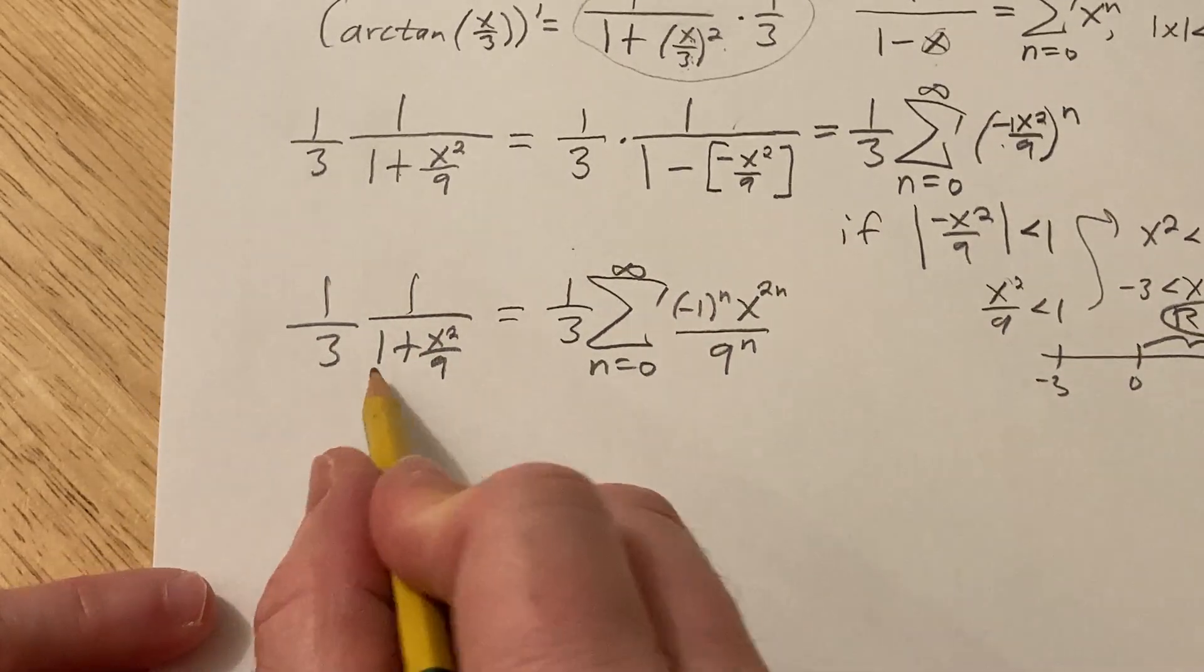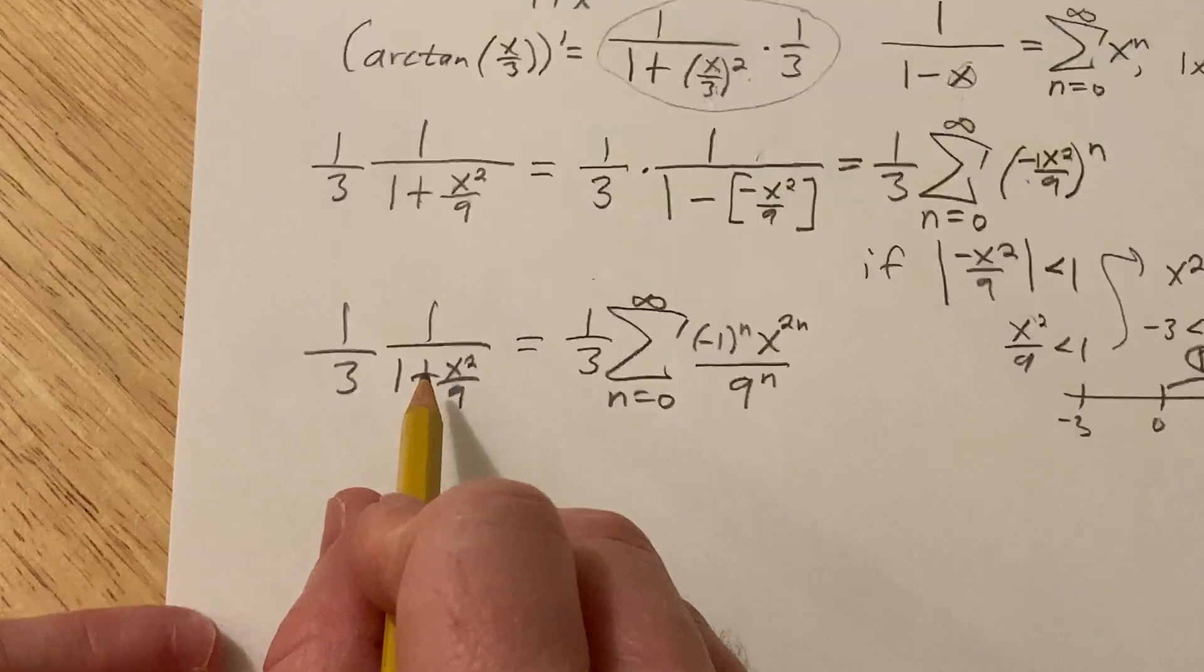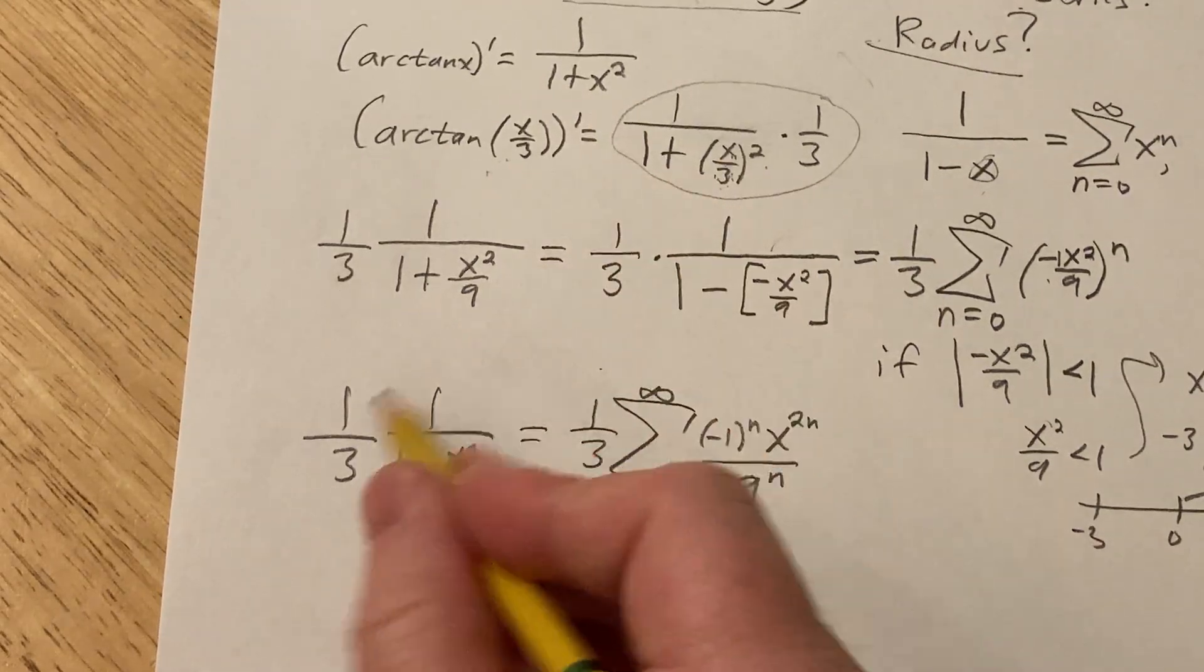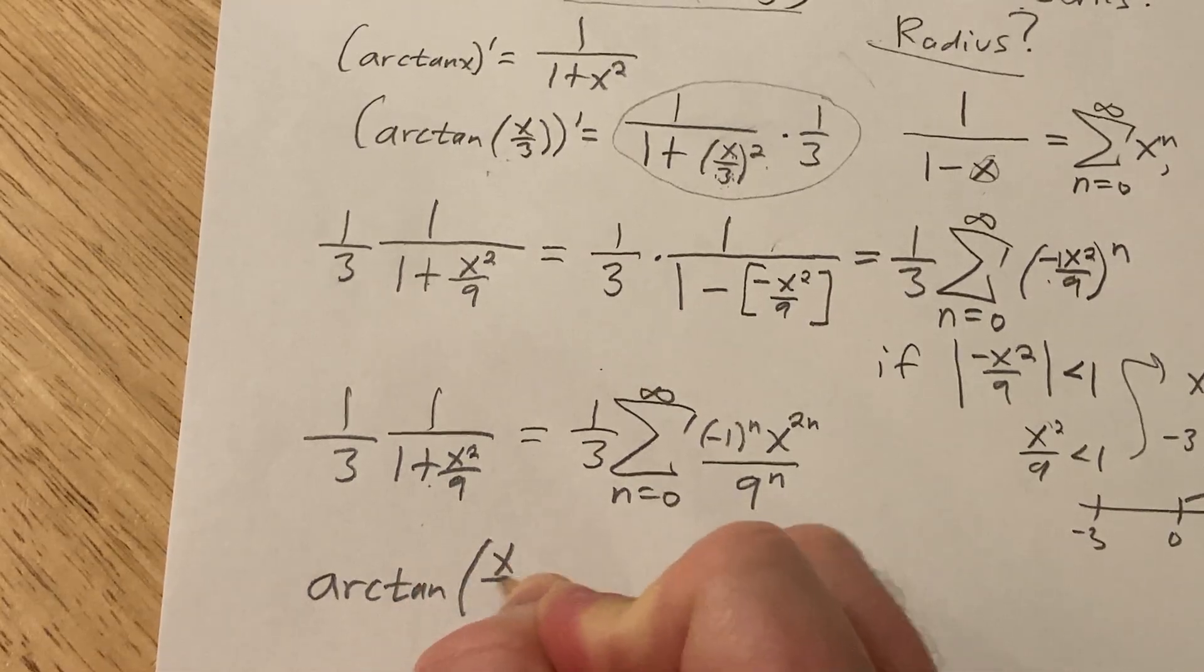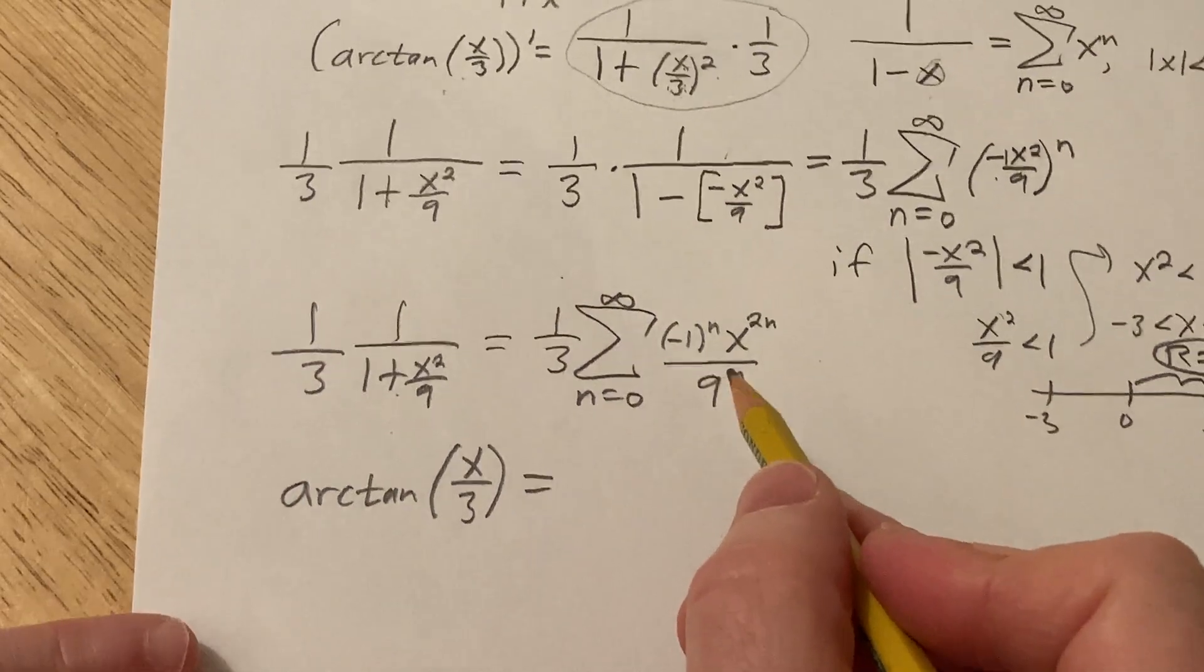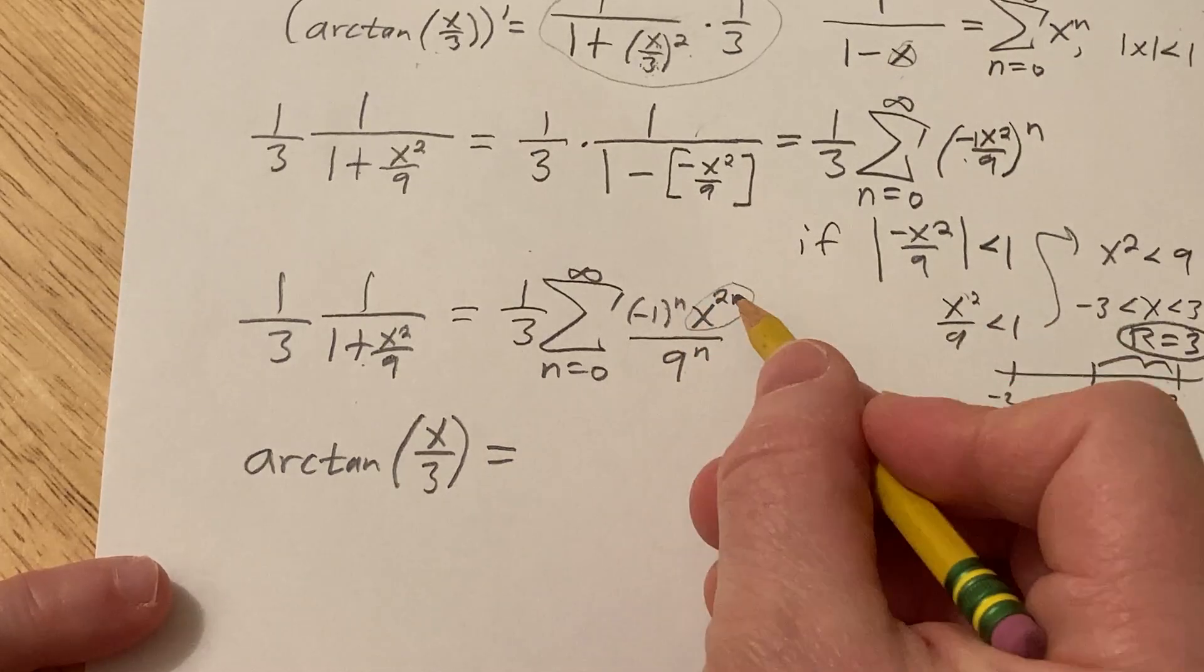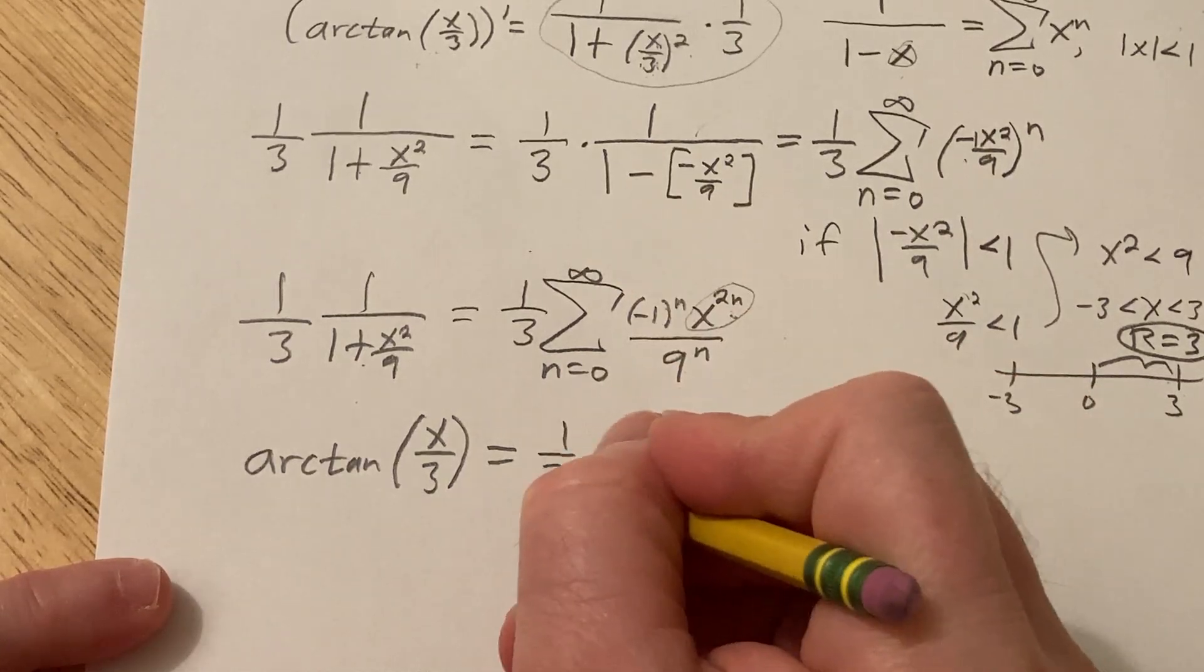So now we're going to integrate both sides. So if we integrate this, we don't even have to integrate it because we know what it is, right? The derivative of this function is this. So when you integrate this, you just get this function. So if I integrate this, I just get arctan of X over 3. And then when you integrate here, you integrate term by term. So basically, this is a constant and this is a constant. These only depend on n. But here's where the X is. So you want to use the power rule for integration on this piece.